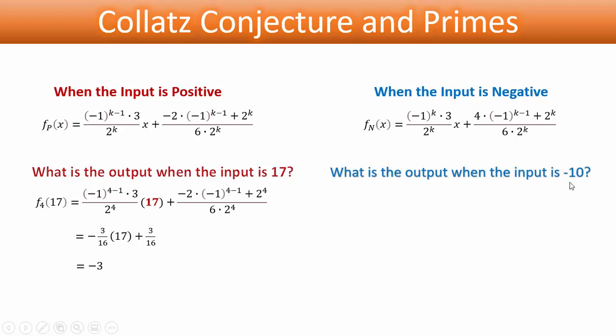If we look at a number, say, a number that's negative, say, negative 10, we do the same thing. In this case, we will choose k to be 3, then the output is 4. So, these two equations, these two diophantine equations, can be used to calculate the output given any input.